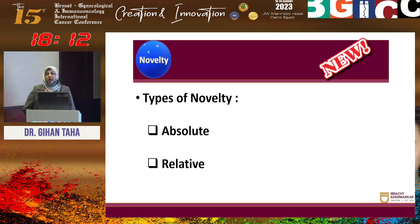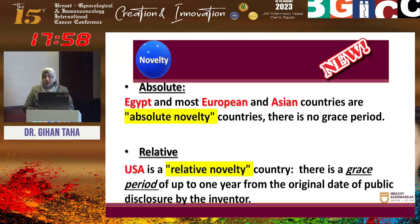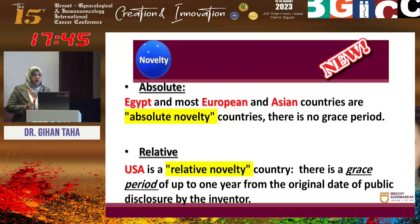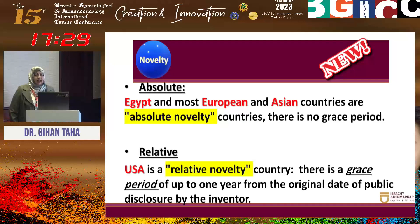There are two types of novelty according to the country where the patent is applied, as each country applies a different approach: absolute and relative. In Egypt and most European and Asian countries, absolute novelty is applied, where the invention cannot be known even one day before applying for the patent. But the USA adopts another system called relative novelty, which is a grace period — it can be up to one year if the invention was revealed by the inventor themselves. But this is not adopted here in Egypt.